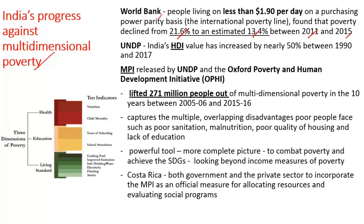The World Bank's definition of poverty is people earning less than $1.9 per day, calculated based on purchasing power parity. The UNDP report suggests that the HDI value has increased almost 50% between 1990 and 2017.